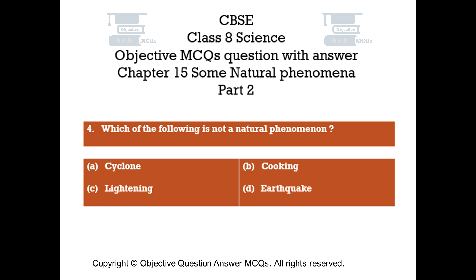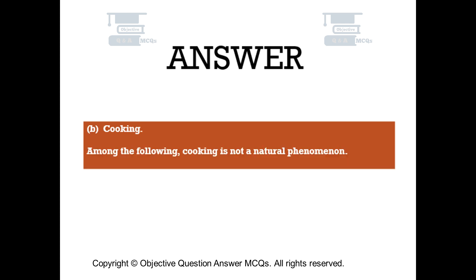Question number 4: Which of the following is not a natural phenomenon? Option A: Cyclone. Option B: Cooking. Option C: Lightning. Option D: Earthquake. The right answer is Option B — Cooking. Among the following, cooking is not a natural phenomenon.